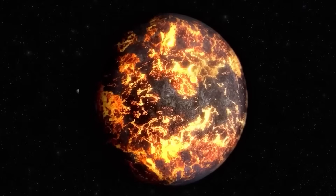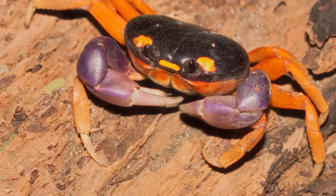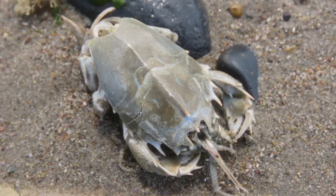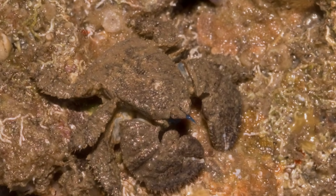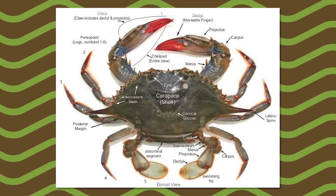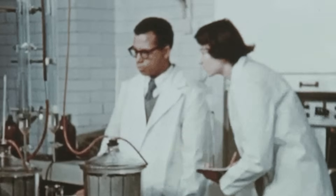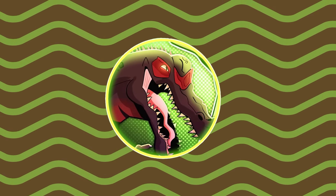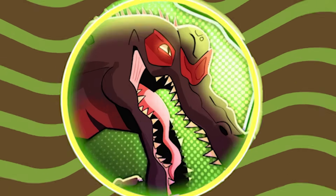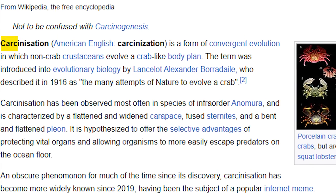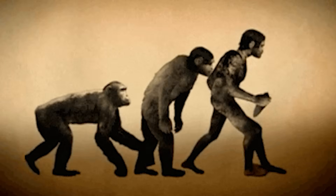Evolution has made the same animal five separate times, and that animal is a crab — which shouldn't be possible. But it keeps happening anyway. Over the last 200 million years, five completely different groups of creatures from different families all independently ended up with the same flat body, tucked tail, and big claws, without comparing notes. Scientists needed a special word for it, and it's called carcinization.